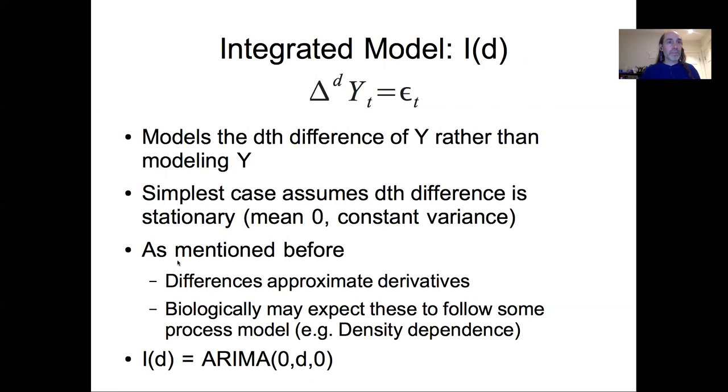As mentioned before, differences approximate derivatives and we biologically may expect to follow some process models. So things like density dependence, ordinary differential equations, partial differential equations, recursive models, any sort of dynamic models often have this integrated framework implicit or explicit in them. And so an integrated model of degree d would just be an ARIMA model of zero autocorrelation, zero moving average, and difference d.